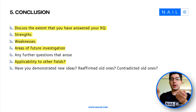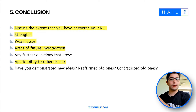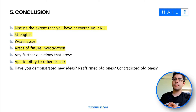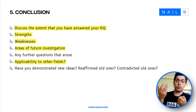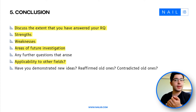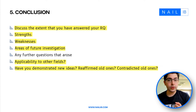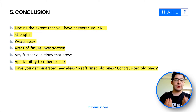Think about applicability to other fields — if you created a new formula in physics, maybe it could also apply to chemistry or engineering. Discuss whether your ideas could be translated to other fields. Also consider whether your research has created a foundation that others can build on — if you introduce something new, talk about how it lays the groundwork for further research and suggest ways people could build on it. Cover whether you've demonstrated new ideas, reaffirmed old ones, or contradicted existing ideas — these are all very important things to address in your conclusion.